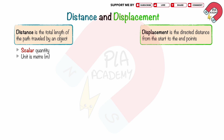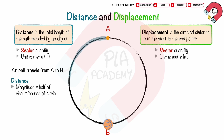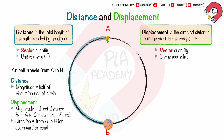Displacement is the directed distance from the start to the end point. Displacement is a vector quantity and its unit is the meter. When a ball travels along a circular track from point A to point B, the distance traveled from A to B is half of the circumference of the circle. The displacement is the diameter of the circle, and its direction points from A to B, or downward, or south.